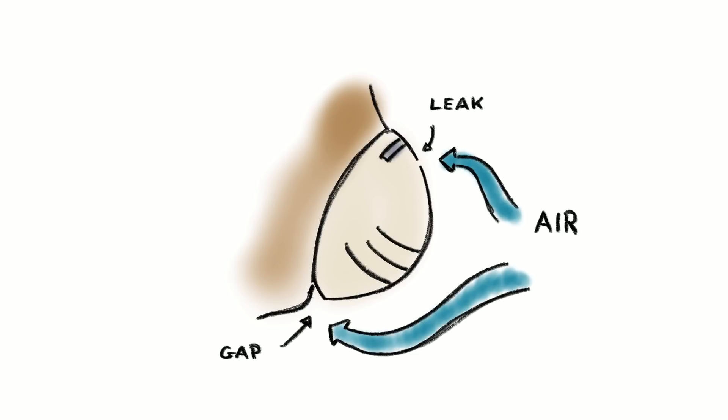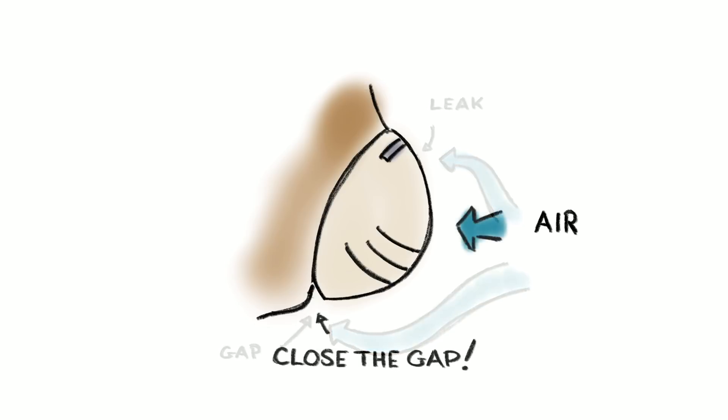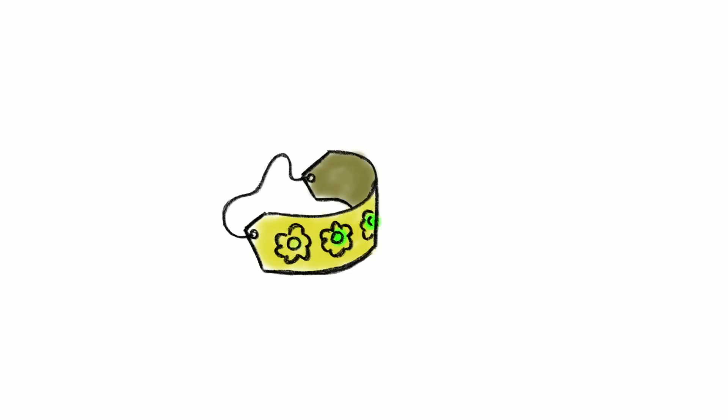To make matters worse, because airflow follows the path of least resistance, the smallest hole or gap in a respirator or face mask can lead to it losing most of its effectiveness. This is why it's so important to have a good seal between a respirator or face mask and your face. It's also why wearing one if you have facial hair is not that effective, as it's impossible to get a good seal.